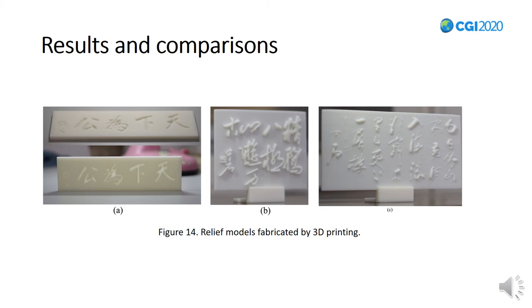As the prediction is a 2.5D height map, it can be easily converted into the form of mesh and fabricated by NC machining or 3D printing.